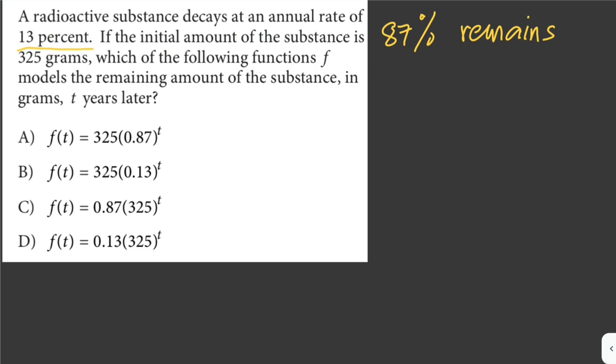Since the initial amount of the radioactive substance was 325 grams, after one year there would be 325 grams times 87%, or we can write it as 0.87. That would be 325 times 0.87 grams remains after one year.